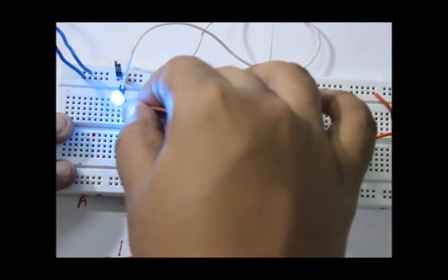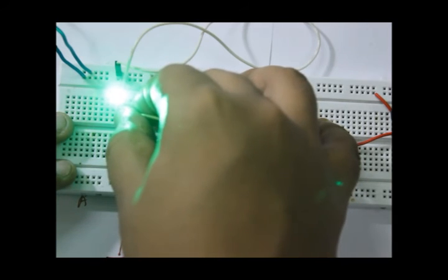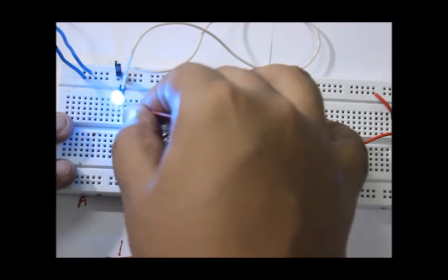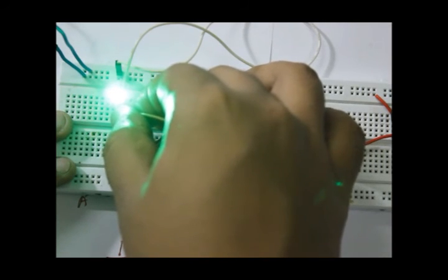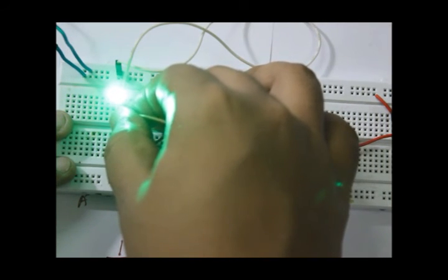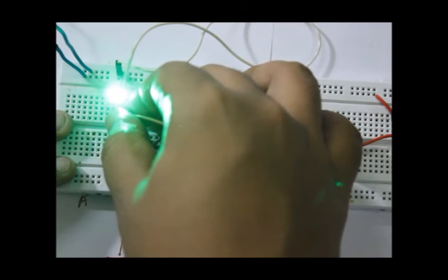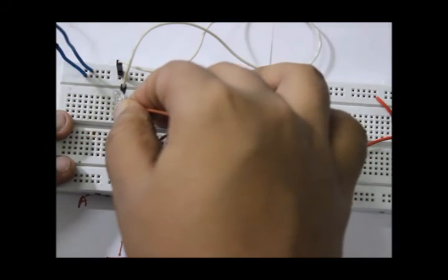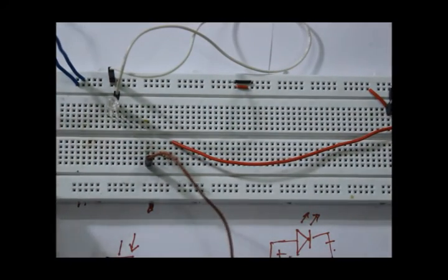If you put the jumper in the next cathode, it will glow in green. And now if I put the jumper in the next cathode, the LED will glow in red. Okay, that's how the RGB LED works.